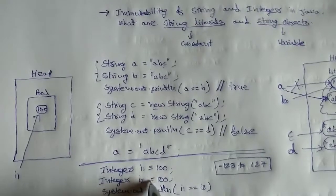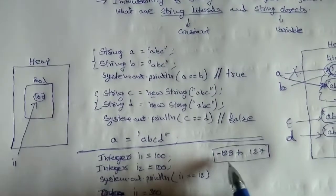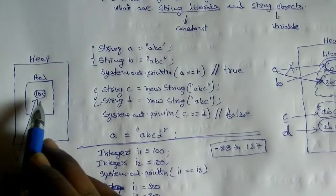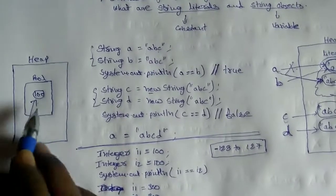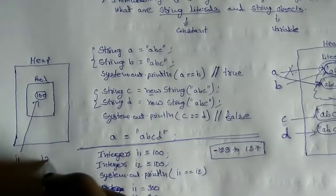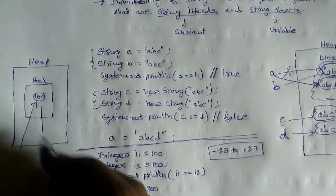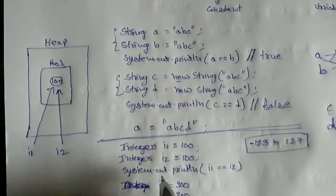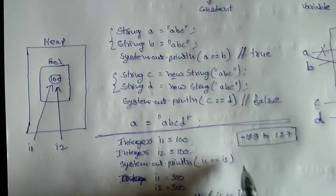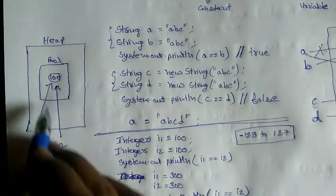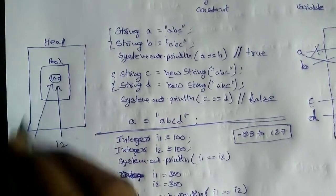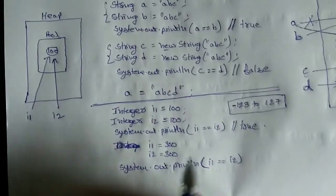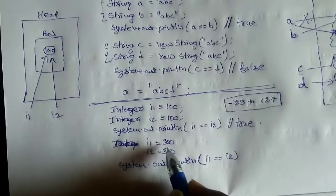Now, Integer i2 equal to 100 — again, 100 is within this range, so it will go to the pool and check whether 100 exists. Since 100 already exists, it will return its reference to i2. Now i2 is also referring to the same object. If you compare i1 == i2, it will return true because they both refer to the same object, 100.